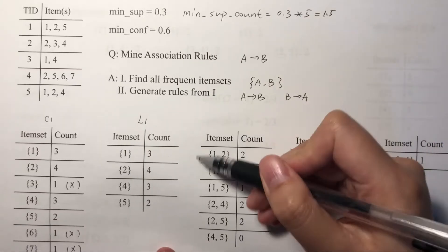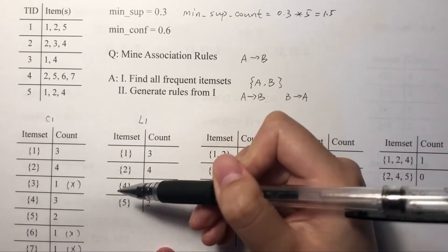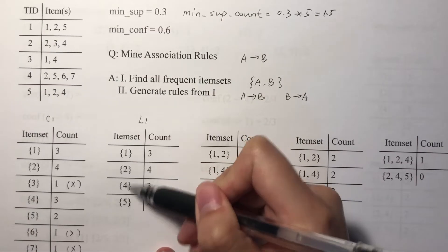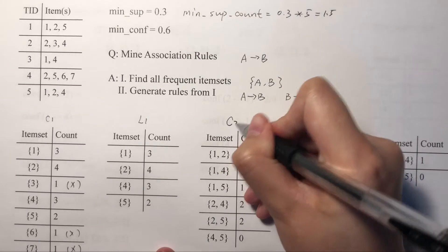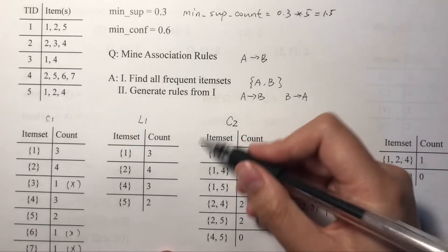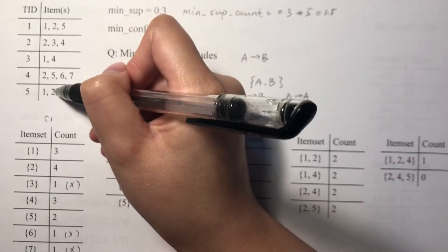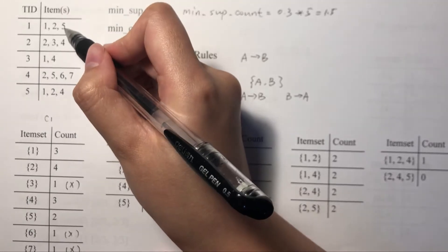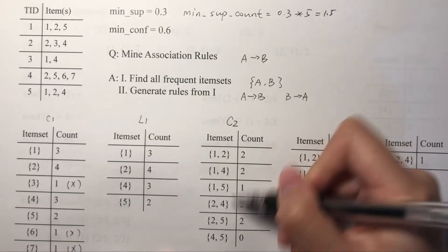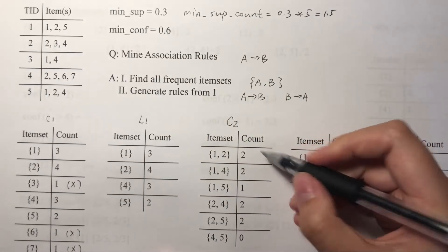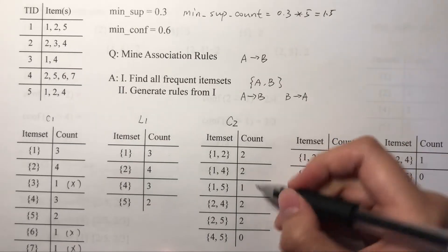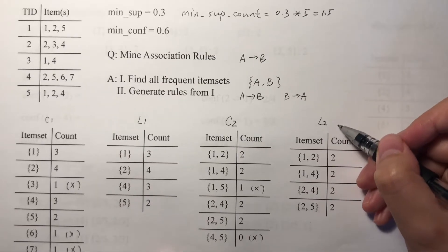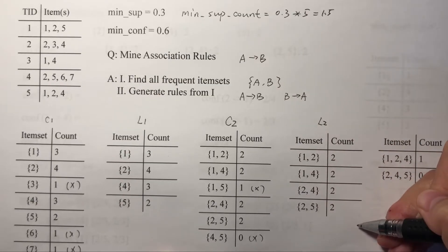To move to level two, we generate candidates from the previous level by combining every two of them: {1,2}, {1,4}, {1,5}, {2,4}, {2,5}, and {4,5}. These are the candidates for level two, C2. We count the occurrences of each itemset — {1,2} occurs twice, {1,4} occurs twice, {1,5} occurs once — and compare with the minimum support count of 1.5. We remove those that don't satisfy it and get L2, the frequent itemsets for level two.